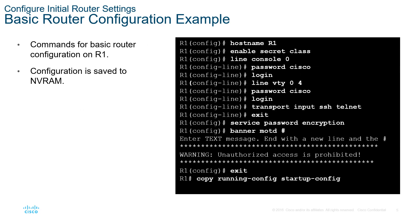So how does that look in practice? Here we have a hostname R1, a password of class. For our line passwords, we have a password of Cisco. Those will all be plain text except for the enable password, until we turn on the service that encrypts our passwords. And then lastly, we have our banner message.